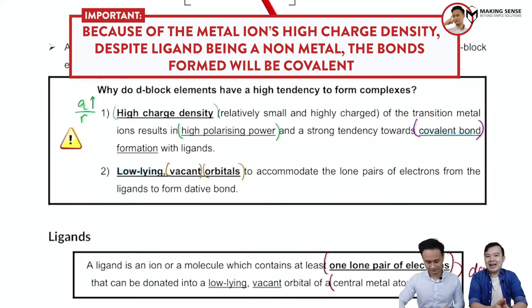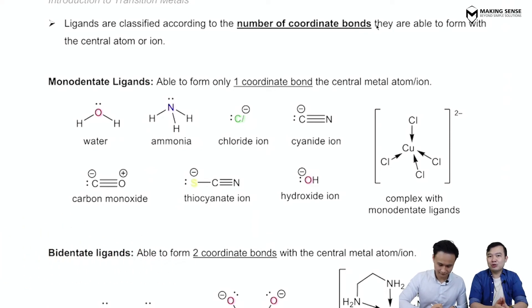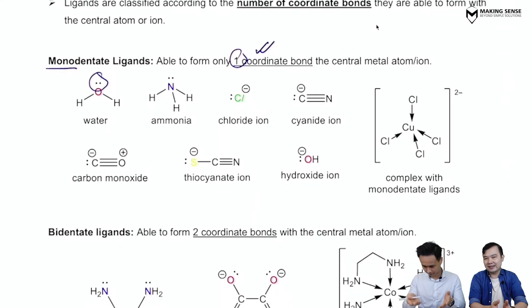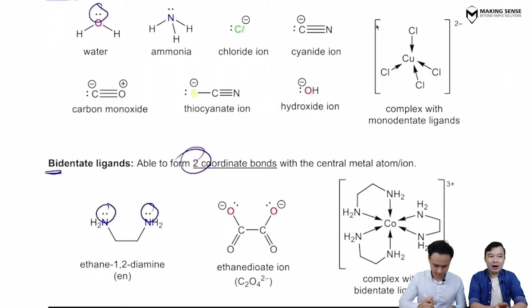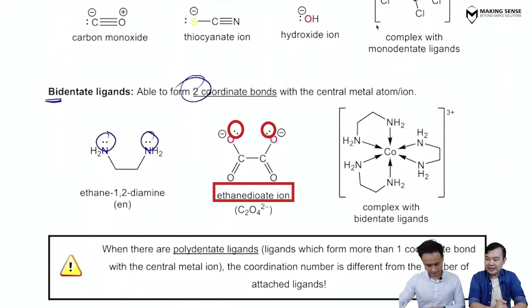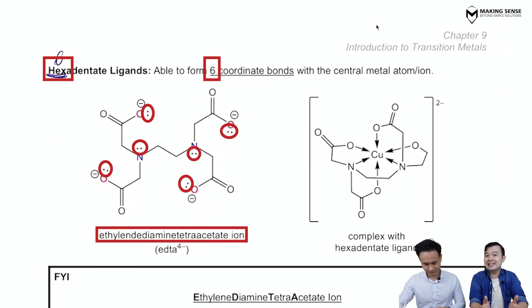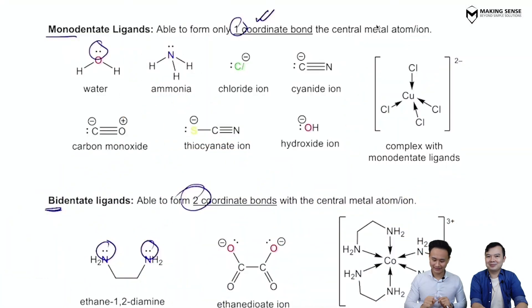Ligands are classified by how many lone pairs they use to form dative bonds. Monodentate ligands form one dative bond — examples include water, ammonia, chloride, and cyanide ions. Bidentate ligands form two dative bonds and must have two donor atoms far enough apart — examples are ethane-1,2-diamine and ethanedioate ion. Hexadentate ligands form up to six dative bonds per ligand — the classic example is EDTA⁴⁻. The suffix '-dentate' comes from 'bite': monodentate bites once, bidentate bites twice.